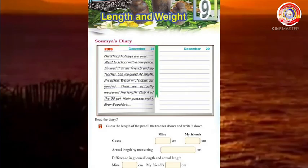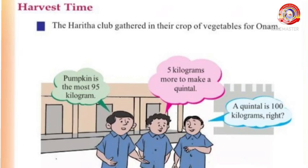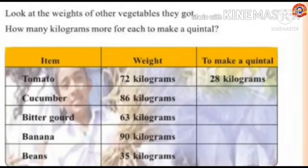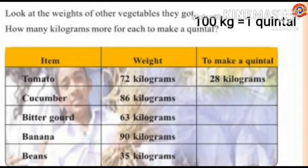First activity: Harvest Time. The Harita Club gathered their crop of vegetables. See what the children say — they discuss about their crop of vegetables. Pumpkin is the most at 95 kilograms, just five kilograms more to make a quintal. A quintal is 100 kilograms. Look at the weights of the other vegetables they got. Let's find how many kilograms more each needs to make a quintal.